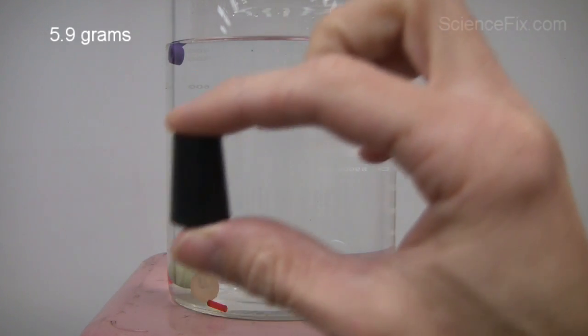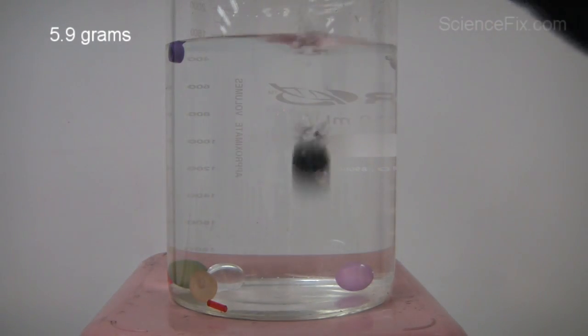This is a black stopper with a hole in it with a mass of 5.9 grams, and it sinks.